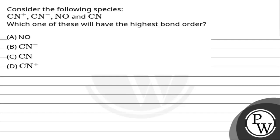Hello, let's read the question. The question says: consider the following species — CN positive, CN negative, NO, CN. Which one of these will have the highest bond order? Option A: NO. Option B: CN negative. Option C: CN. Option D: CN positive.